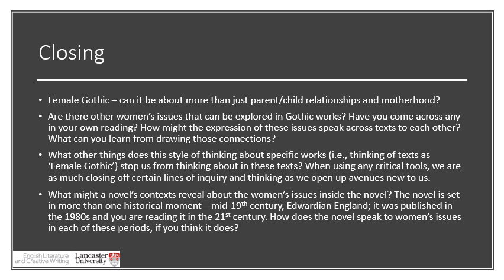So it's important to think about how these labels stop us from thinking about certain things in texts as much as they encourage us to think about others. Another question to consider: what does the novel's context reveal about women's issues? The novel is set at more than one point in history — some of it in the mid-19th century, Kipps's recollection being in the Edwardian period, the novel published in the 1980s, and you are reading it in the 21st century. How does the novel speak to each of these periods and the women's issues of those periods, if at all? You can poke and prod this notion of Female Gothic and more questions will come out, developing greater thinking about it over time.